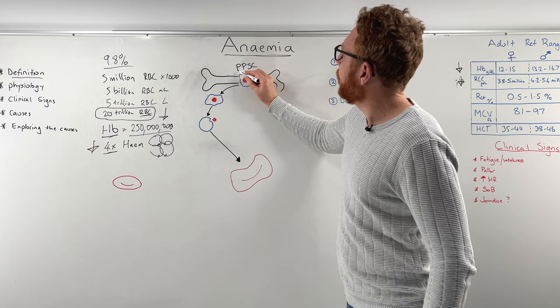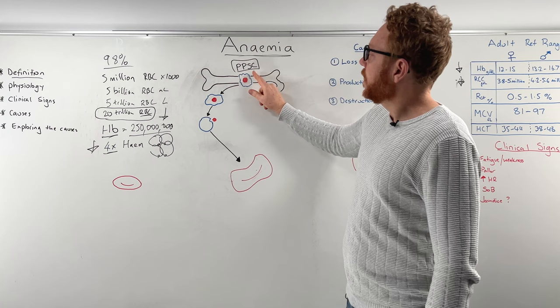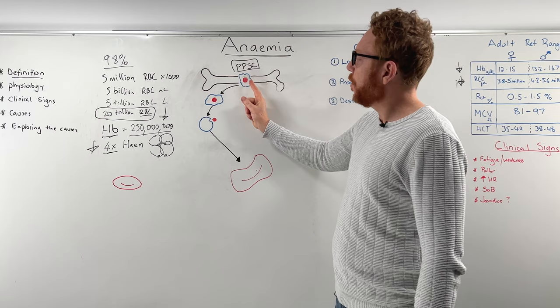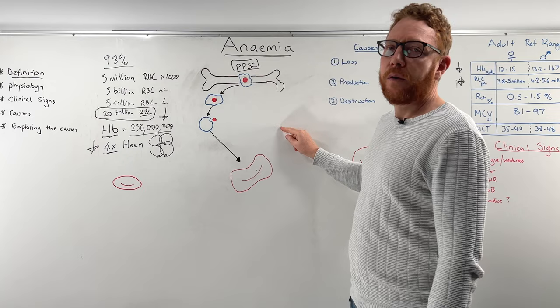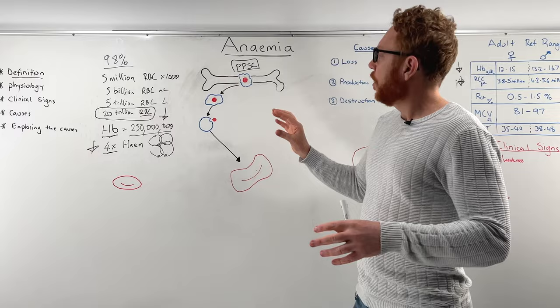There are millions of these pluripotent stem cells in your bone marrow. They constantly replicate to keep the number of stem cells in the bone, but they also produce whichever lineage is needed — red blood cells, platelets, or white blood cells. In terms of red cells, these stem cells are making 2 million red cells per second throughout all your bone marrow, so they are very busy.